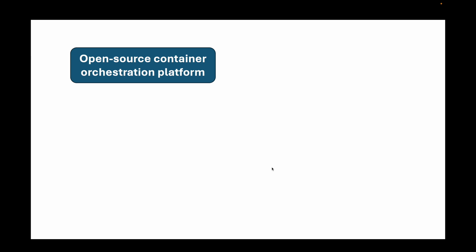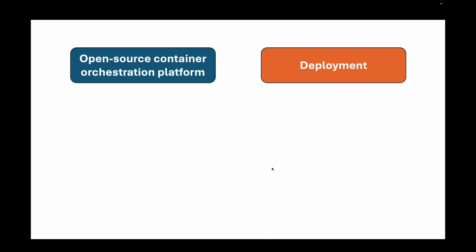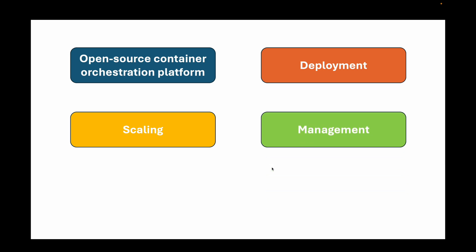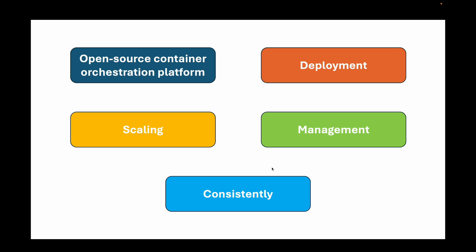Before we jump into the architecture, let's quickly recap what Kubernetes is. Kubernetes is an open-source container orchestration platform that we can use to automate deployment, scaling, and management of our containerized applications. Think of it as a system designed to help you run your applications consistently — whether on-premises, on a public cloud, or in a hybrid environment, regardless of your underlying infrastructure.